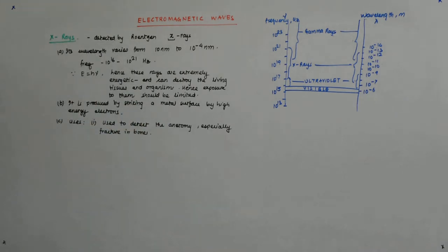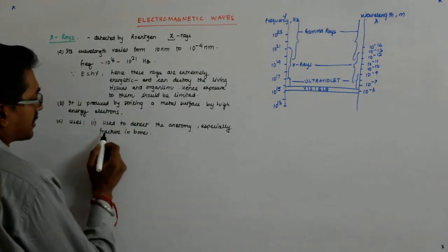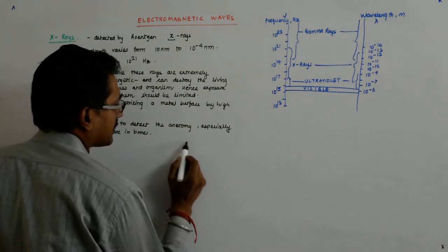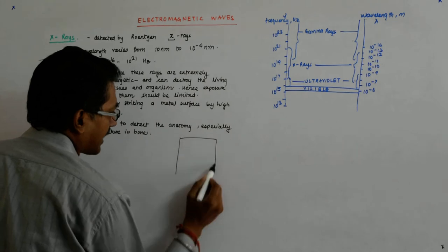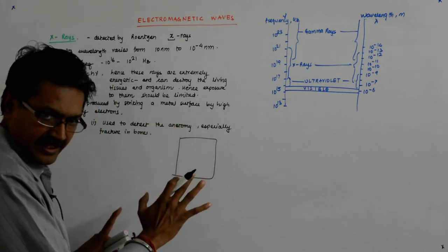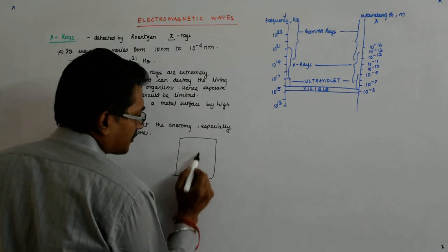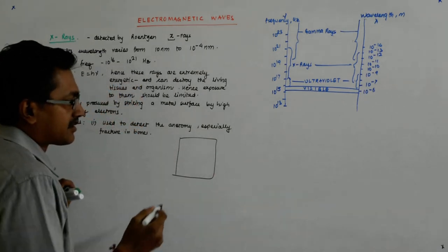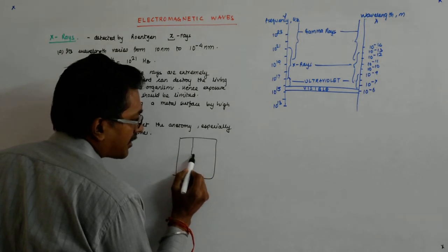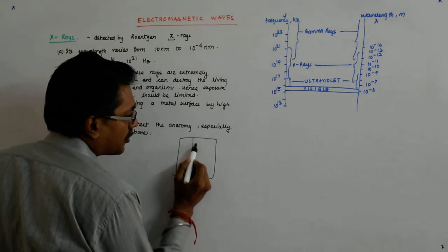So, it is used to detect the anatomy especially the fracture in bones. Now what happens if this is the plate and you expose it to the x-ray, so what happens the whole of the plate gets darkened except for the part where maybe the bone is there.